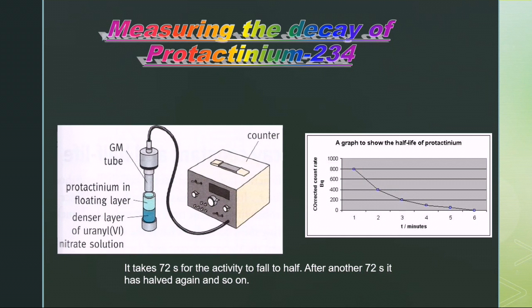The most suitable isotope in this case is protactinium-234, which decays by emitting beta radiation. This is produced in a bottle containing a solution of uranyl nitrate, which is a uranium compound.